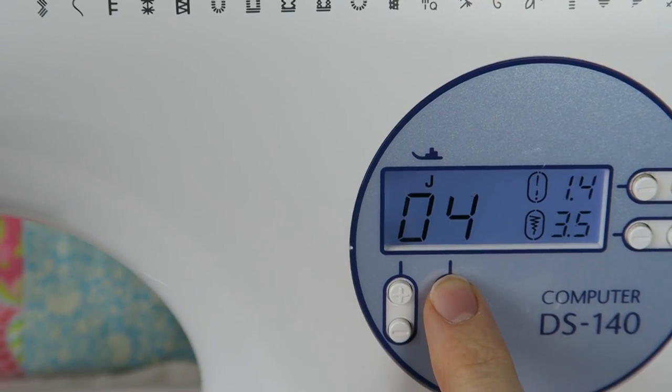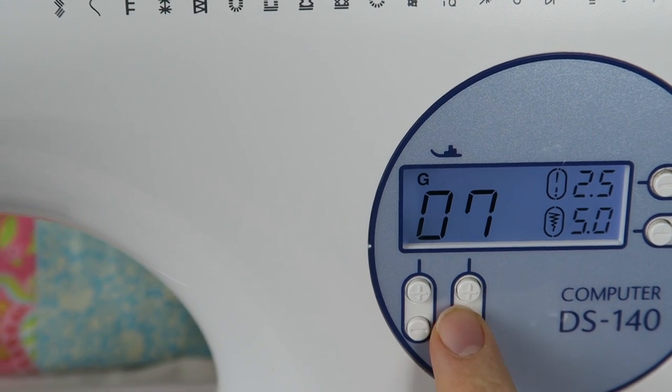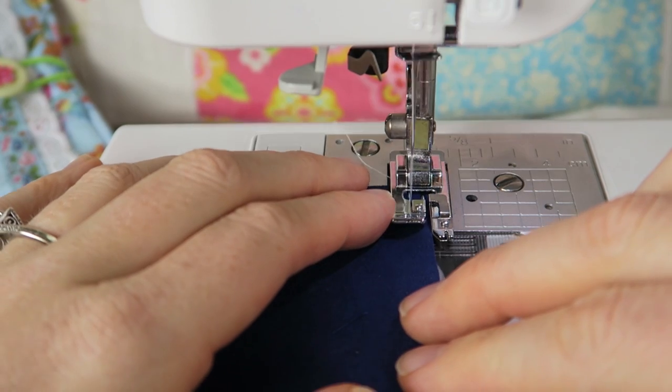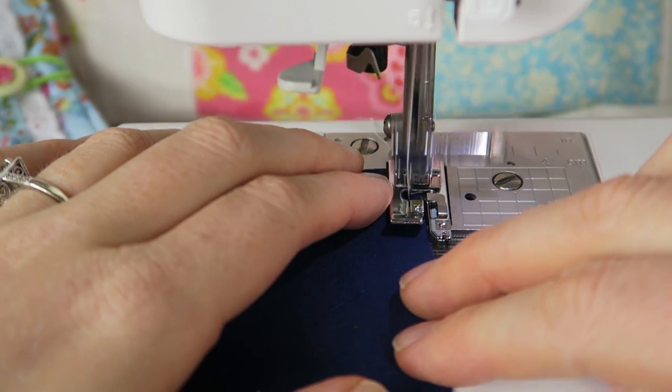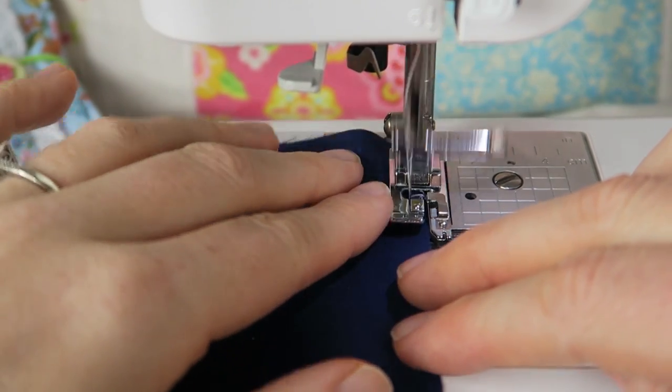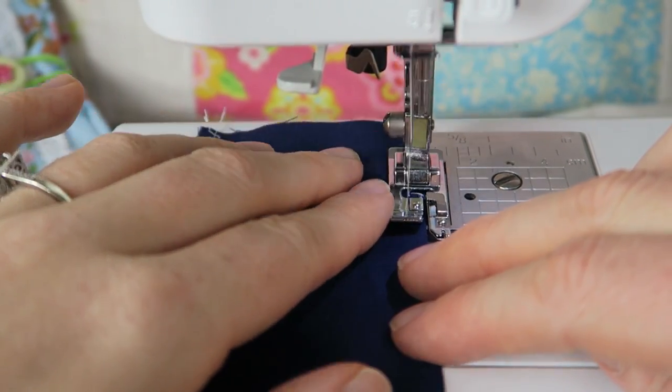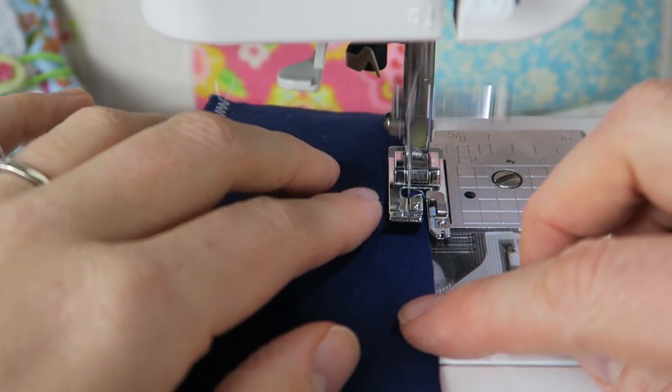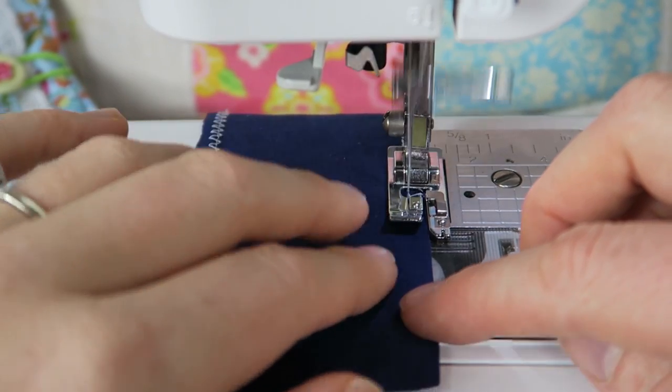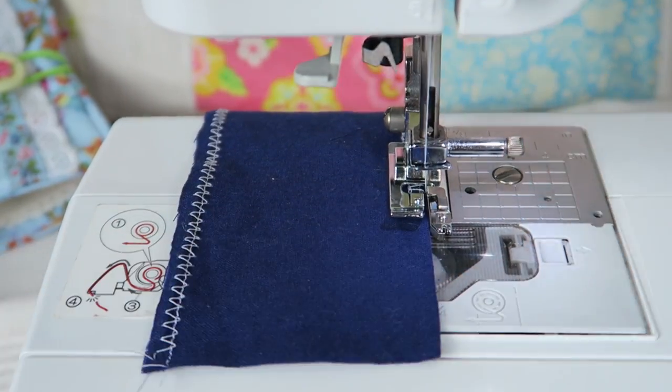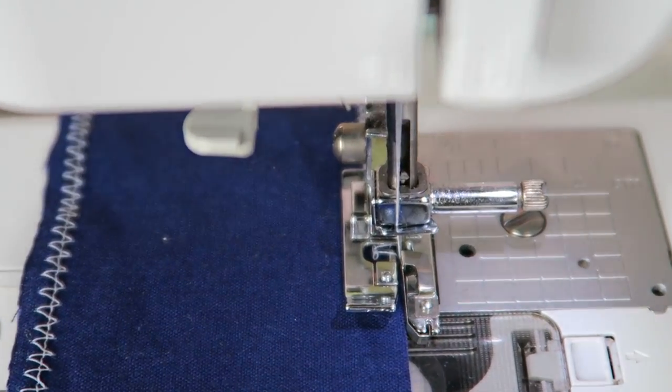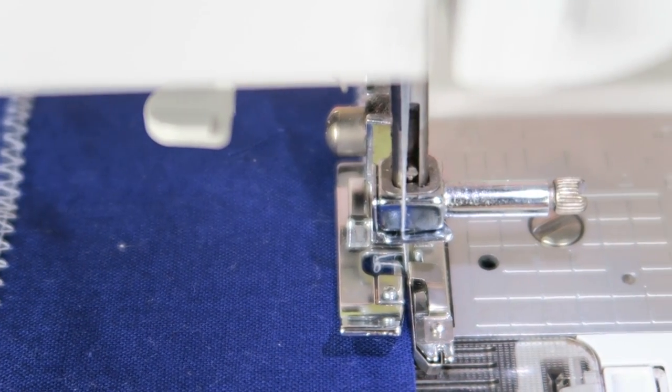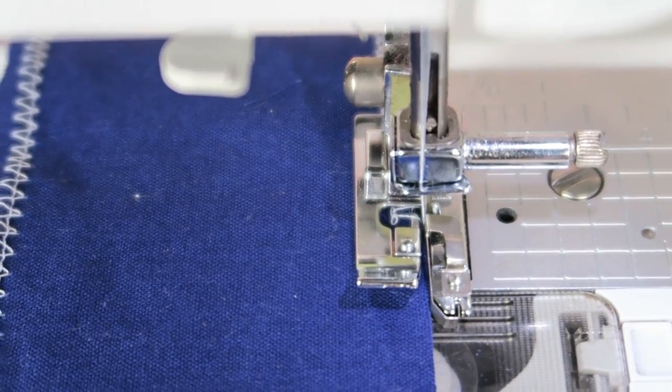So I'm going to start with stitch number seven, which is the prettiest one of the overcasting stitches I think. Now you just guide the raw edge of the fabric under the foot here, and this little ridge that stands over on the side is making sure that the fabric is not slipping away and you're really sewing along the edge here.